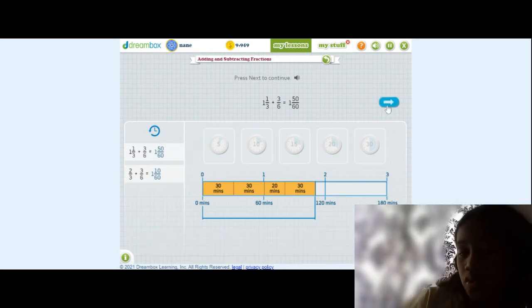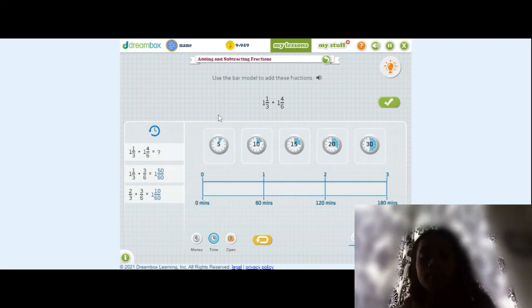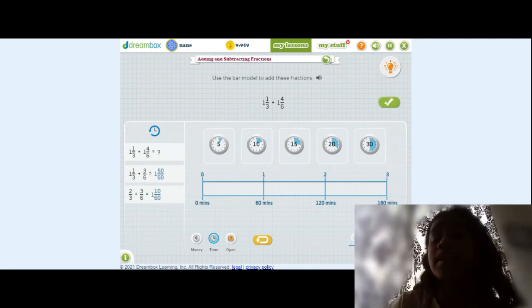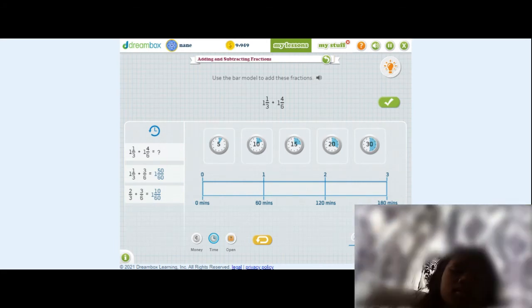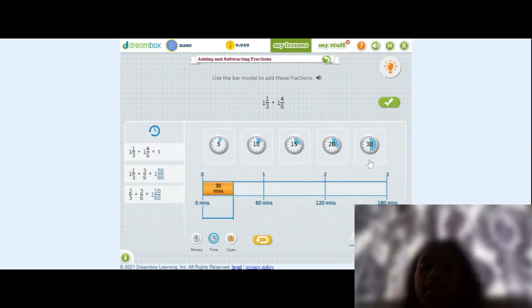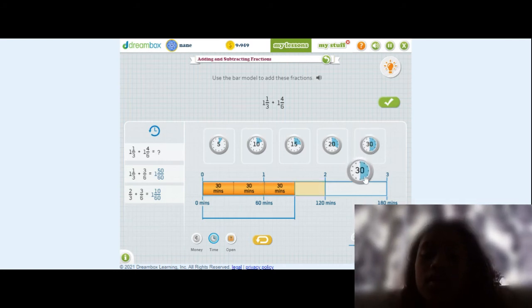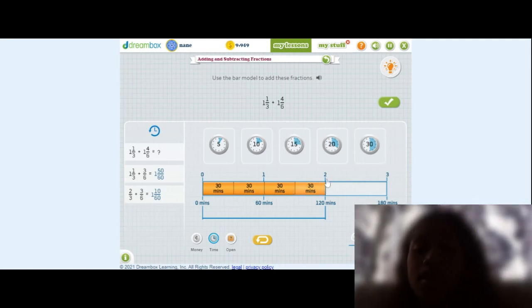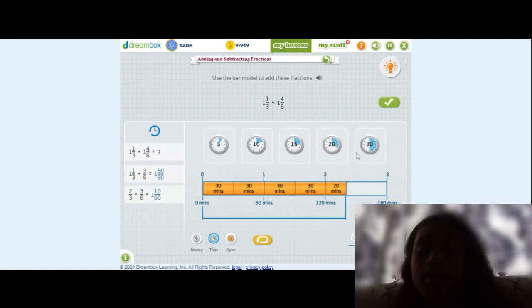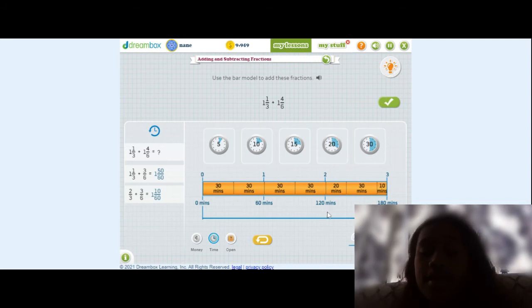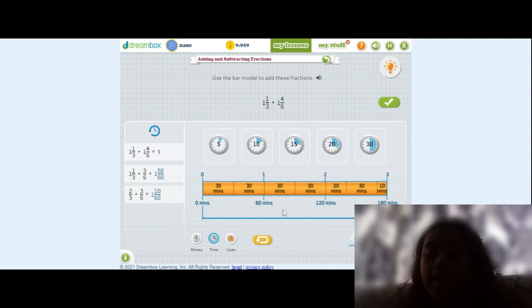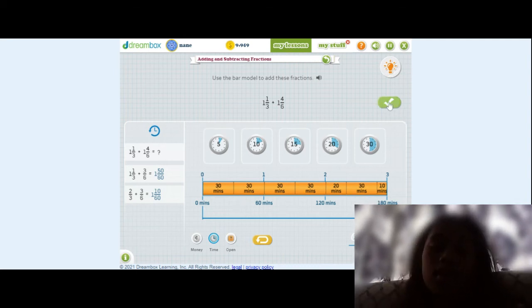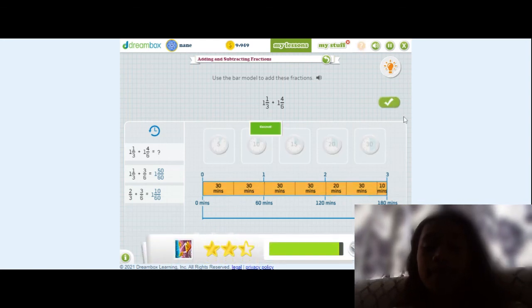Now, we have 1 and 1/3 plus 1 and 4/6. So, I'm just going to do the 1 first, because it's just easy, 1, 1, and I'm going to do the 1/3 and 1 4/6. So, 1/3 would be 1, 4/6 would be 40. And, as you can see here, this equals a whole 3 or a whole 180 minutes. And, now we can press next. Continue.